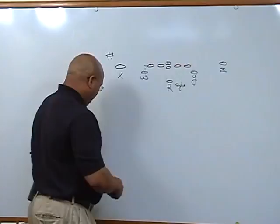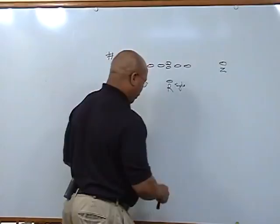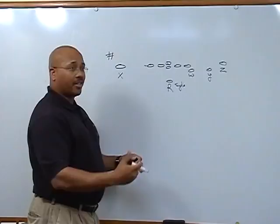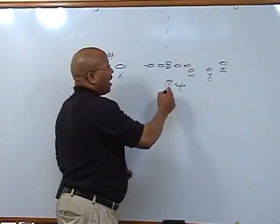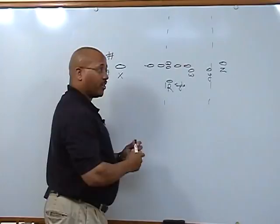Our second formation that we run is what we call trips. In trips, what we do is we just move the wing backs over. We move our W wing back to the inside, and we tell our Y wing back to split the difference between the W and the Z. He doesn't have a basic alignment. If we line up on the hash, if we have to be on the left hash, then we would want our Y to be on the right hash. Generally that would be the proper spacing for them. But his general rule is to line up and split the difference between the W and the Z receivers.